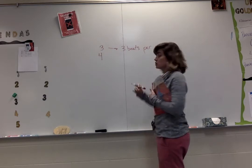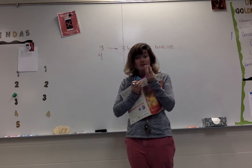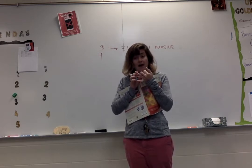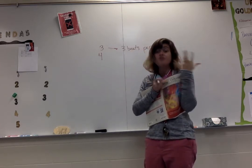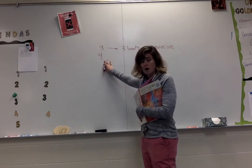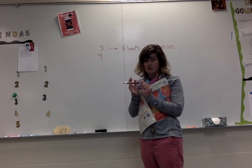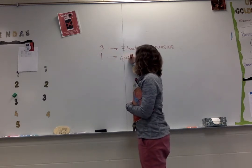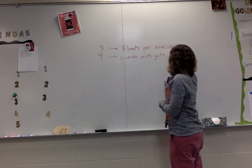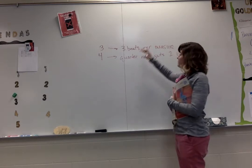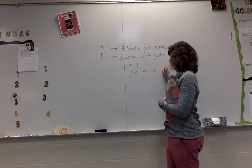The bottom number refers to what kind of note gets one beat — what kind of note, so quarter note, half note, eighth note, whole note, receives one beat. How many of that kind of note fit in one measure? If it's a 4, which is very common for us, that refers to a quarter note. So in this case, the quarter note receives one beat. So if you were going to write a measure of 3/4, it would look like this: three quarters. That's one measure.